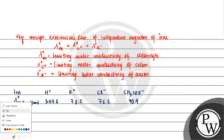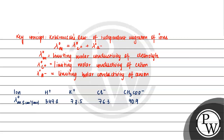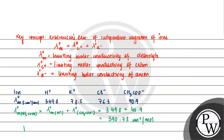Now let us calculate the limiting molar conductivity of the electrolytes using these values. For CH3COOH, that equals the limiting molar conductivity of H⁺ plus the limiting molar conductivity of CH3COO⁻, which is 349.8 plus 40.9, giving approximately 390.7 S·cm² per mole.